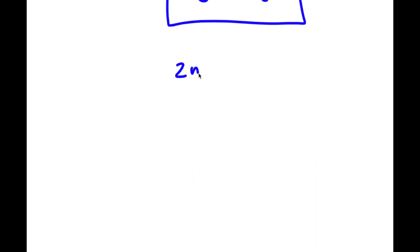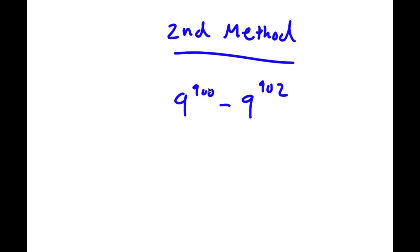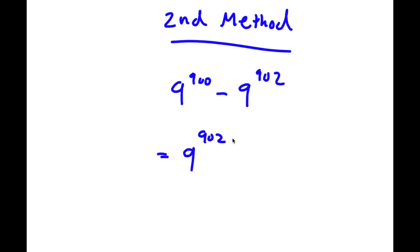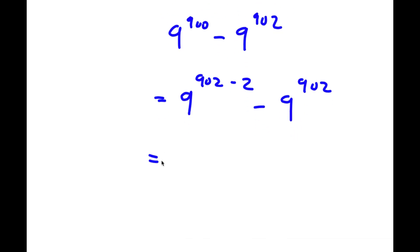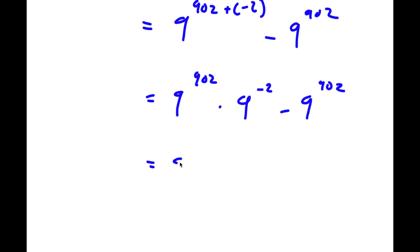Now, a second method of solving this problem. Starting with 9 to the power of 900 minus 9 to the power of 902, instead of rewriting 902 as 900 plus 2, I'm going to rewrite 900 as 902 minus 2. So now I have 9 to the power of 902 minus 2 minus 9 to the power of 902. Rewriting the exponent, this is equal to 9 to the power of 902 times 9 to the power of negative 2 minus 9 to the power of 902. Factoring out 9 to the power of 902 gives 9 to the power of 902 times the quantity 9 to the power of negative 2 minus 1.